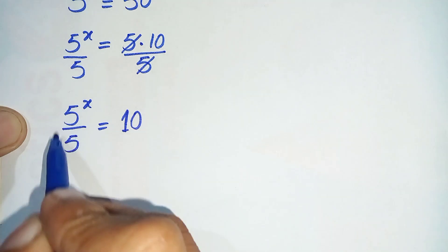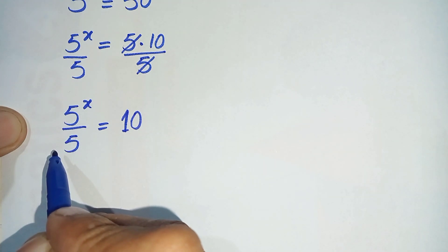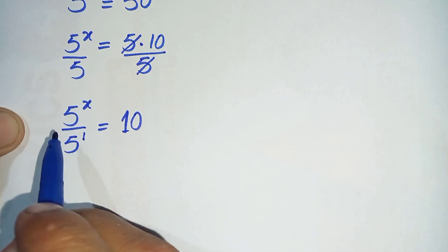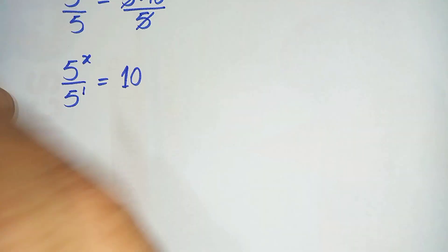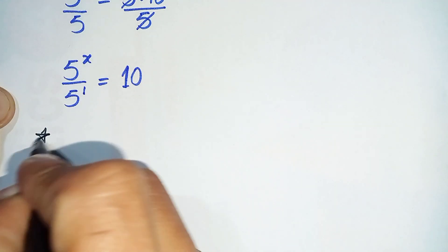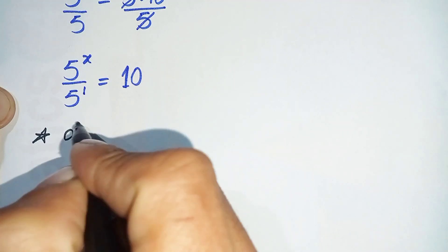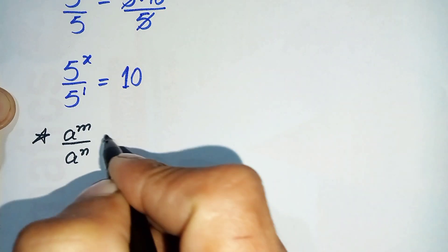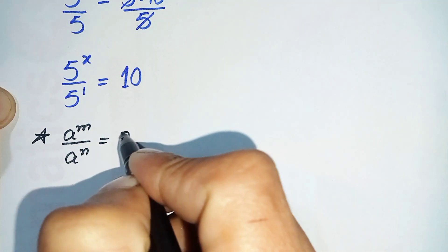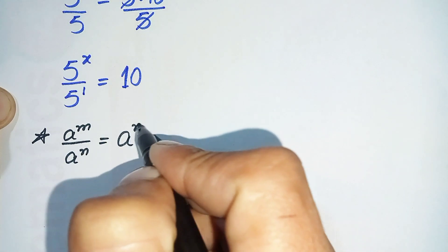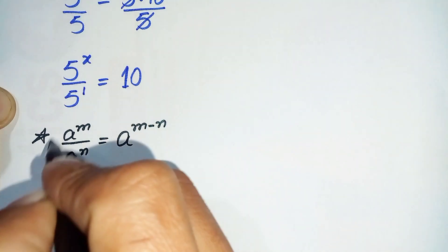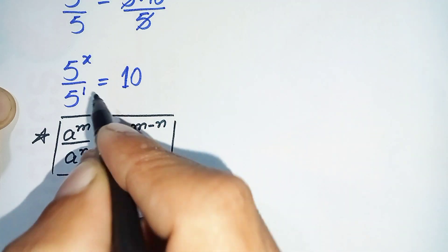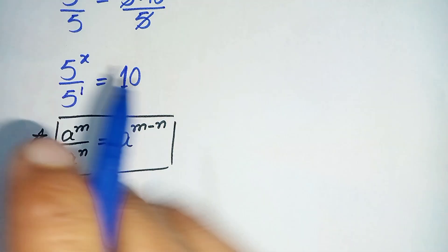Now look at the left hand side — in the numerator and denominator both have the same base. Here the power in the denominator is 1, and we will use the same base formula: a raised to power m divided by a raised to power n.